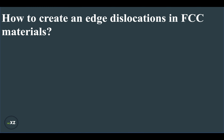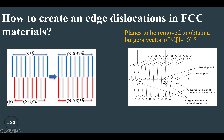To create edge dislocations in FCC materials, the edge dislocation is represented by the Burgers vector half [1 1-bar 0]. The stacking is A-B-A-B, and the Burgers vector b1 represents [1 1-bar 0], which has four planes of atoms A-B-A-B. Taking half of [1 1-bar 0] represents the A and B planes. So to create the dislocation, we have to remove two planes of atoms — not one — because removing only one plane disrupts the A-B-A-B stacking. After removing the planes, the spacing becomes n times the Burgers vector b above and n minus one times b below.